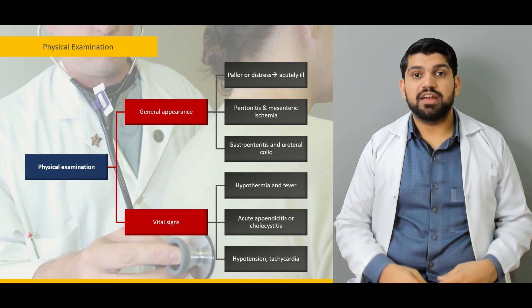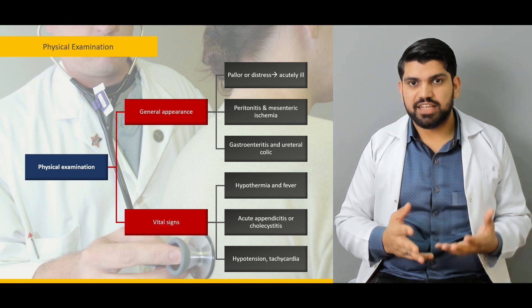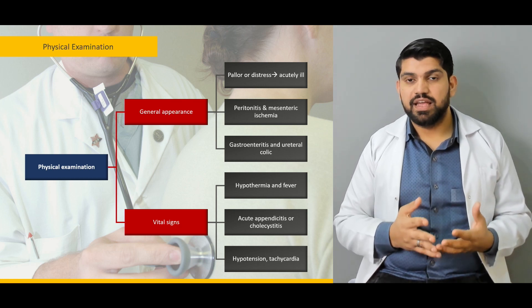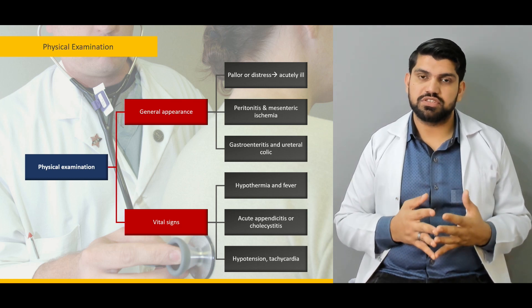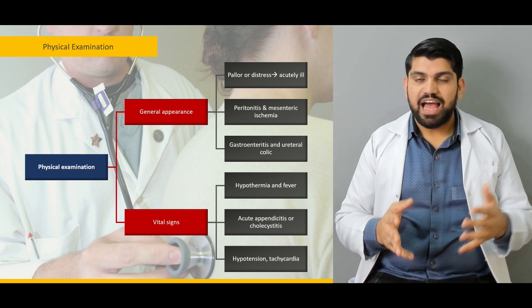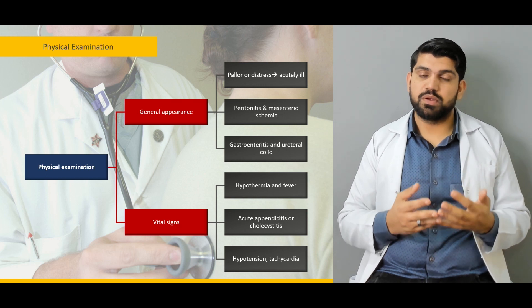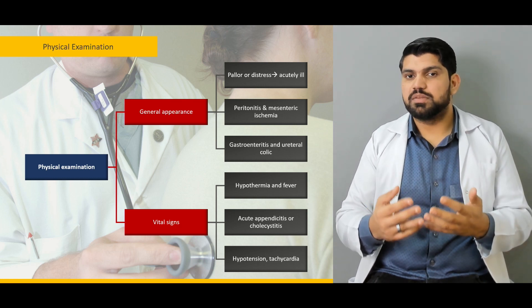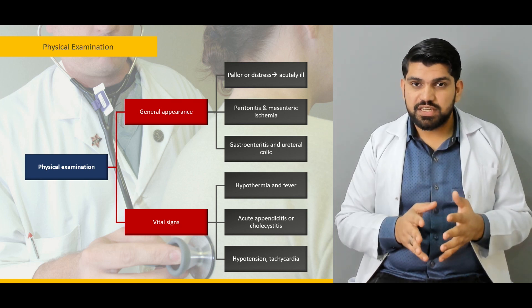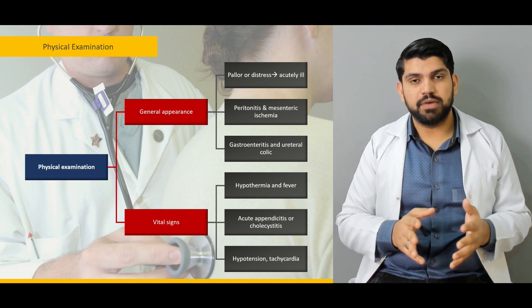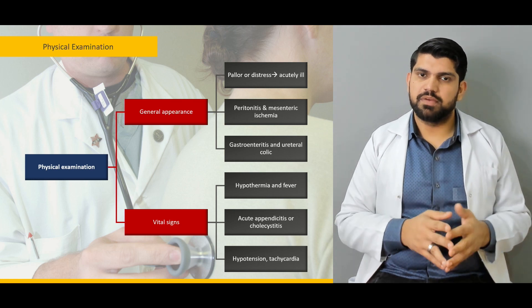We'll talk about physical examination — how the patient can present and what makes you think this patient is critically ill and needs emergency attention. What to look at first, how to check vitals, what to interpret from your vitals, and how to make the patient hemodynamically stable. Remember: in the emergency, you don't have to make the diagnosis first — you have to make the patient hemodynamically stable.